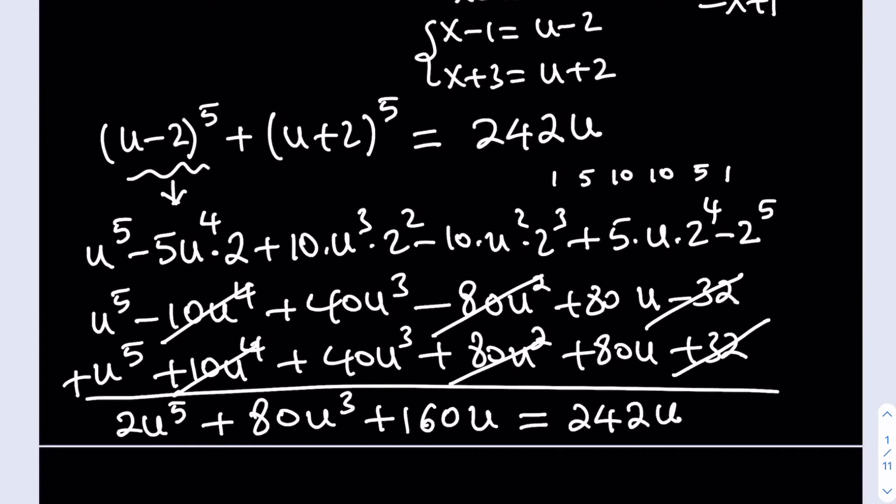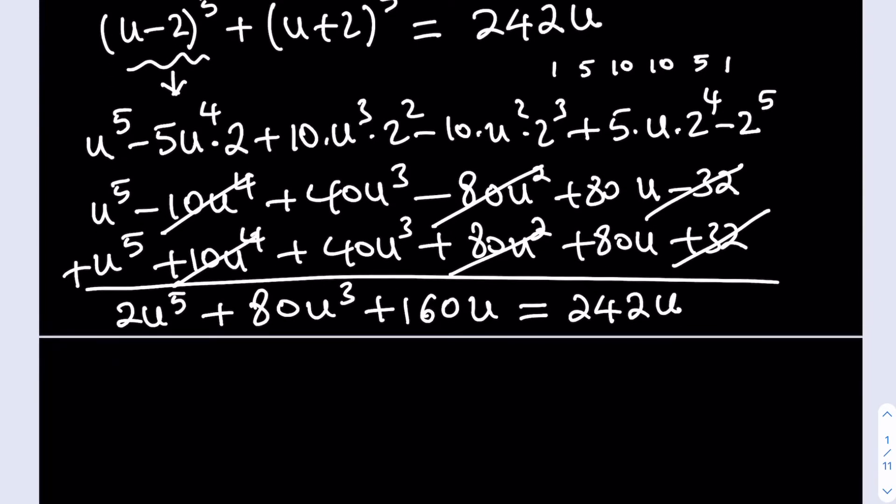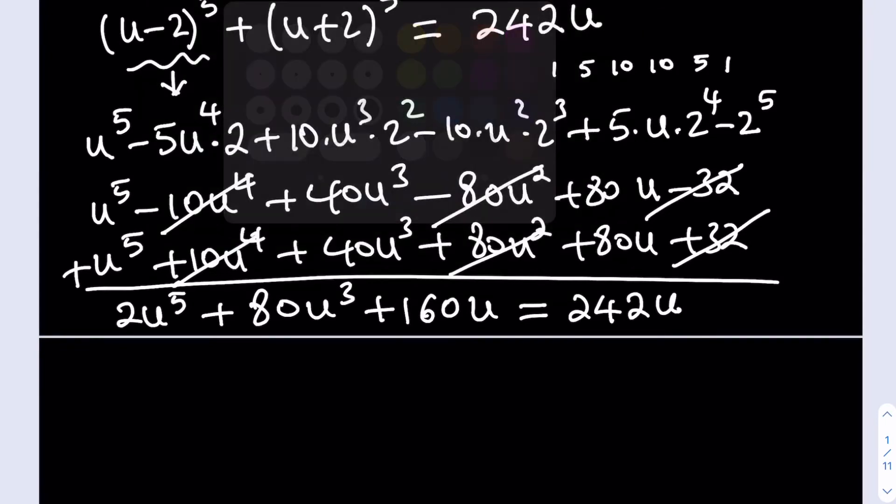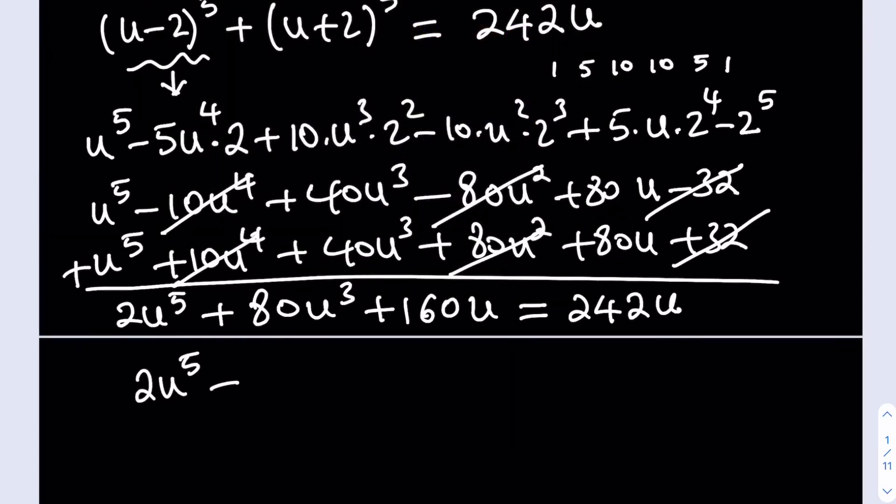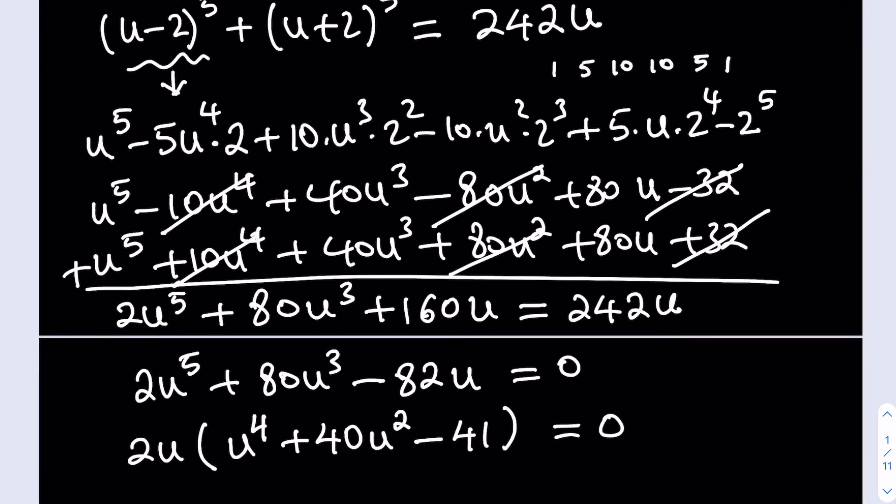If you subtract 242u from both sides, then you'll be getting 2u^5 + 80u^3 - 82u = 0. Now, obviously, we can divide both sides by 2, but not only that, we can actually factor out a 2u here. Let's take out the 2u, and inside the parentheses, we're going to get u^4 + 40u^2 - 41. This is cool because u=0 is one of the solutions.